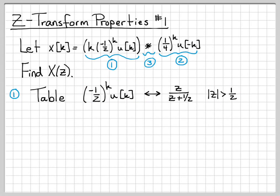However, this isn't the exact signal that I have in part one. In part one, I actually have a k sitting right here, so I don't exactly have this signal. However, I have a Z-transform property that can help me figure this out very easily. There's a property that says multiplying in the time domain by k is equivalent to multiplying by negative Z times the derivative of X of Z in the Z-domain.